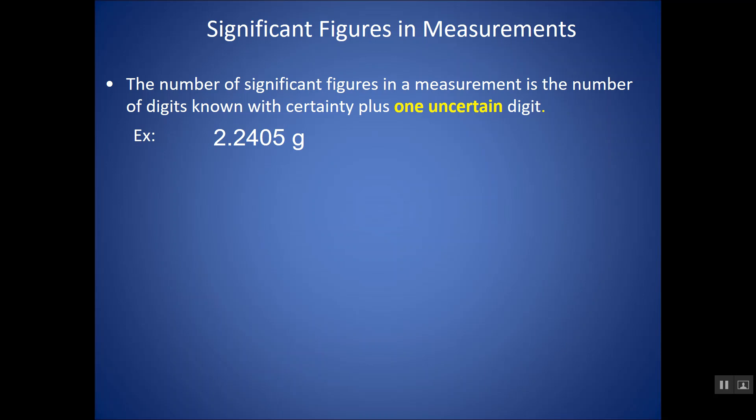So when you record a number, what you're essentially doing is you're writing down as many digits that are known with certainty plus one uncertain digit. That's the rule.